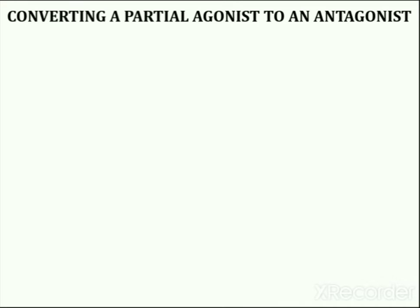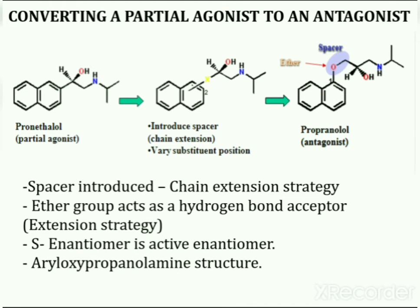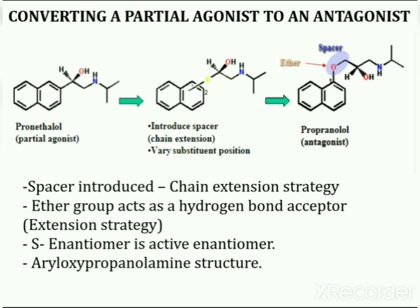Next is converting a partial agonist to an antagonist. Introduction of a spacer group, which is an ether, in the side chain of pronethalol generates propranolol. Introduction of this spacer group is a chain extension strategy. Propranolol is a beta antagonist. Here the ether group acts as a hydrogen bond acceptor, and introduction of this group generated an aryloxypropanolamine structure in which the S enantiomer is the active enantiomer.